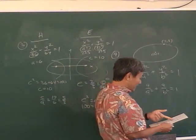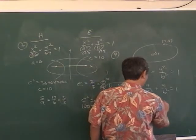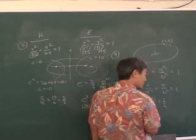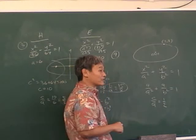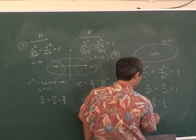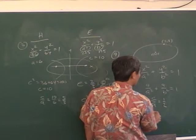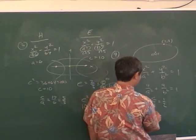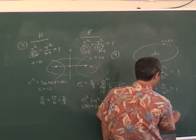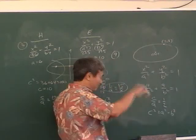Eccentricity is one half, so c/a equals 1/2, but now you introduce a third variable c. You need three equations — but that's easy because c² equals a² minus b² always works in an ellipse. Three equations, three variables, solve it.